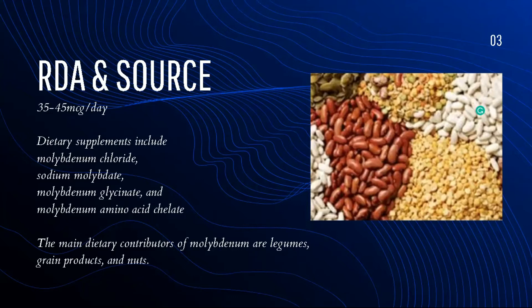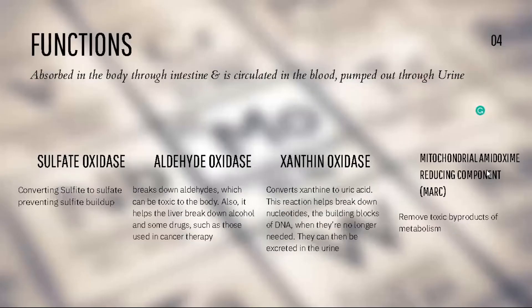molybdenum glycinate, or molybdenum amino acid chelate. You derive this from legumes, plants, grains, and nuts. When we think about its importance in our body, molybdenum is basically absorbed freely through the intestine